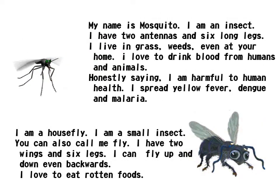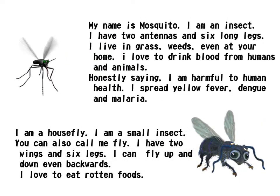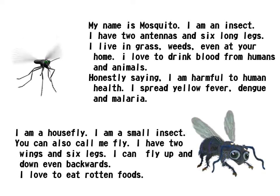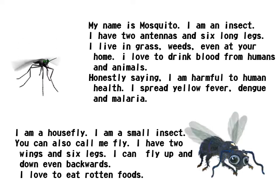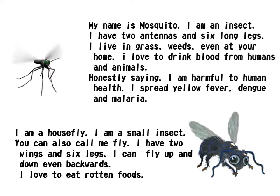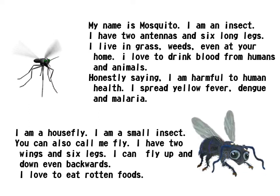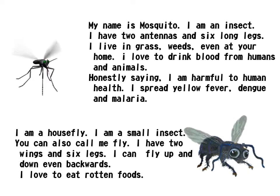My name is Mosquito. I am an insect. I have two antennas and six long legs. I live in grass, weeds, even at your home. I love to drink blood from humans and animals. Honestly saying, I am harmful to humans' health. I spread yellow fever, dengue, and malaria.